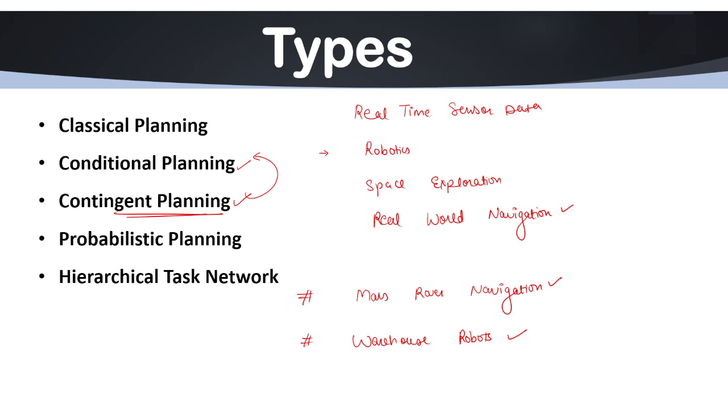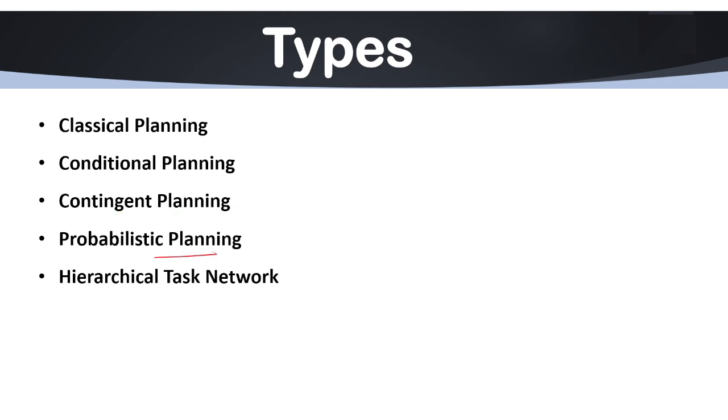Another type we have is probabilistic planning. Under probabilistic planning, it always uses probability. It always deals with uncertainty by assigning probabilities to different actions and their outcomes. It is used when multiple possible results exist for the same action. We have only one action and it is giving us multiple possible results.